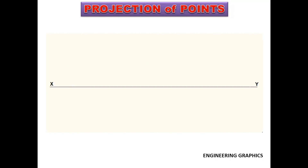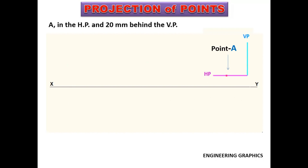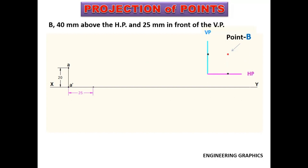First, draw an XY line for accommodating all these points. Point A is in the HP and 20 mm behind the VP. Since the point is in HP, its elevation will be on the XY line. Plan will be on the HP; when we rotate the HP through 90 degrees in clockwise direction, the plan will be above the XY line at a distance of 20 mm. Point B is 40 mm above the HP and 25 mm in front of the VP. The distance between projectors is to be maintained at 25 mm. The point is in the first quadrant, so elevation should be drawn 40 mm above the XY line. When HP is rotated, the plan will be 25 mm below the XY line.